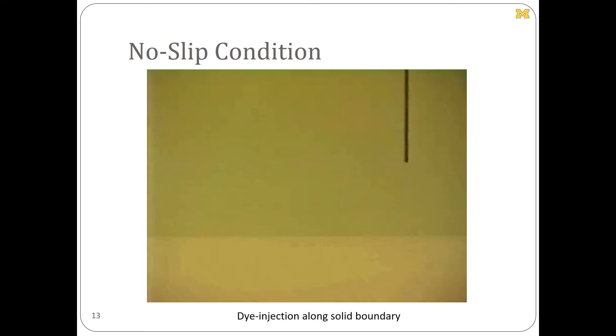So the no-slip boundary condition is shown in this video example right here. Now what you're going to see is this is a needle, and it's going to be injecting dye along a wall while a fluid velocity—or a fluid—flows by with some velocity going from right to left.